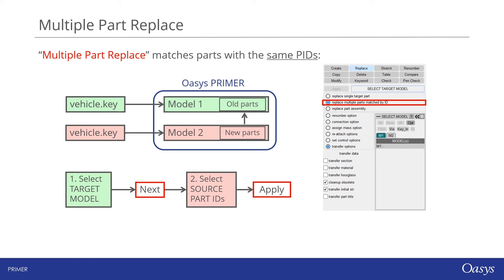Let's look at replacing multiple parts using the part replace tool. The workflow begins in much the same way — reading target and source models and opening the part replace panel — but here we should select 'replace multiple parts matched by ID' rather than 'replace single target part'. The target model is selected, then the parts from the source model to be imported. In this case, the target and source part IDs must be the same so that Primer can correctly map parts from source to target. Note that although the element types of matching parts must be the same, a mixture of parts with different element types may be replaced in a single operation.